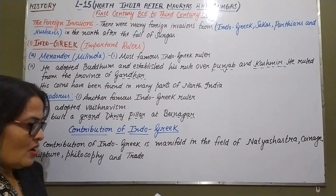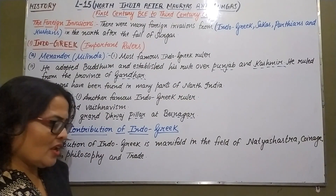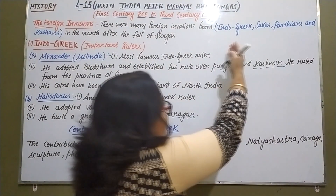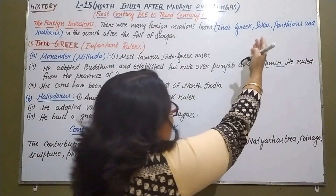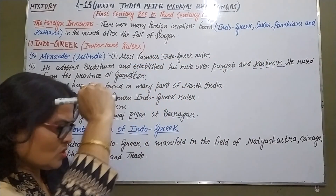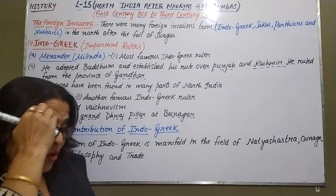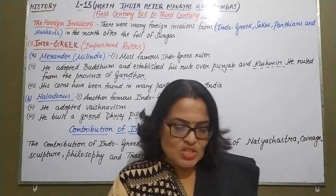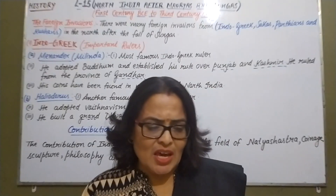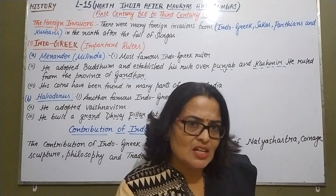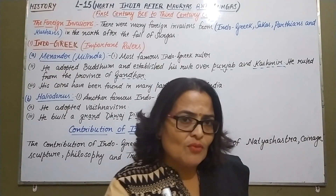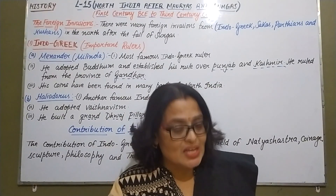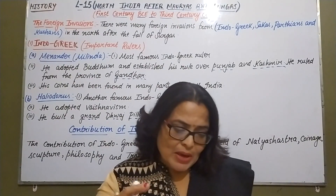Now, Indo-Greeks. Before starting, I want to tell you that the Indo-Greeks, Sakas, Parthians, and Kushans all belong to Asian tribes, but they merged with Indian culture after coming to India.